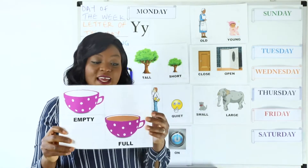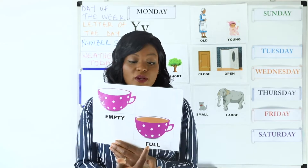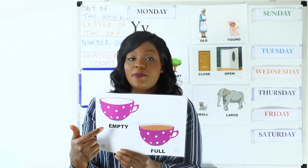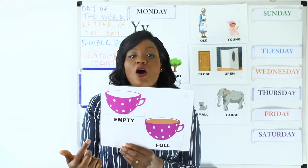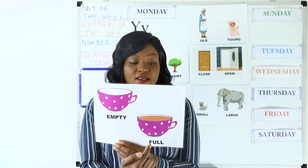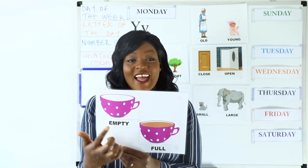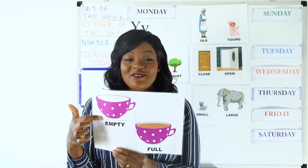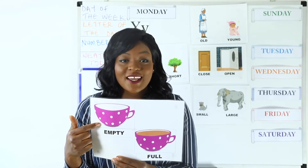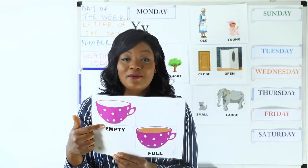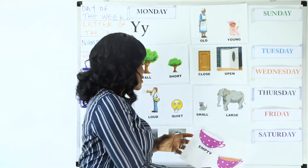In the next picture I have two cups — one is empty and one is full. The opposite of empty is full. So what's the opposite of full? It's empty. If something is not full then it's empty, and if something is empty then it is full. Good job everyone.